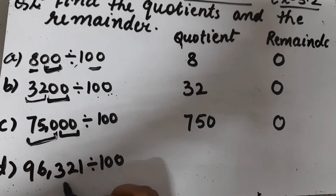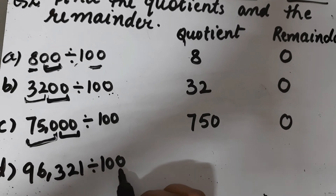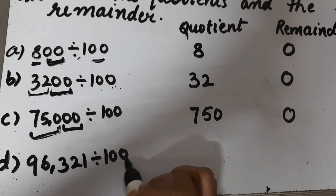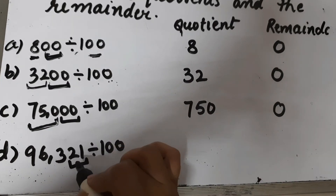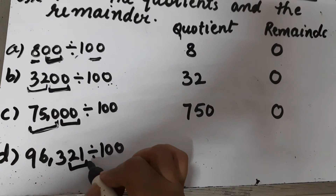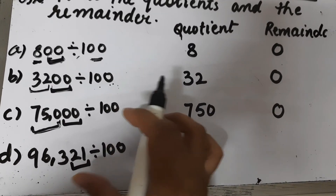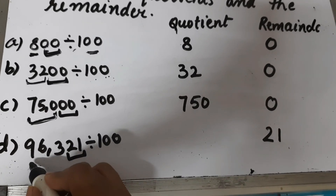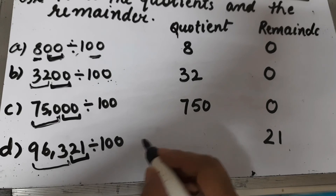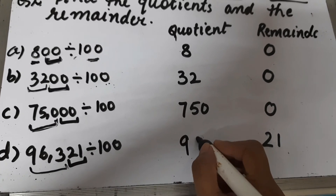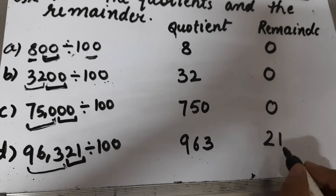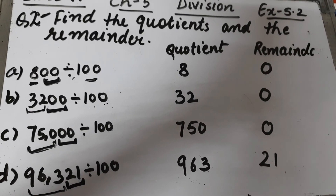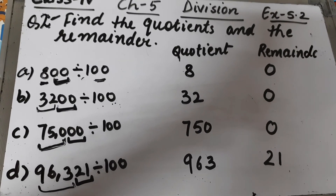Part d is 96321 divided by 100. We are dividing by 100, so the number formed by the digits at the ones and tens place will be the remainder, and the number formed by the rest of the digits will be the quotient. So the quotient will be 963 and the remainder will be 21. This is question number 2 of Exercise 5.2.